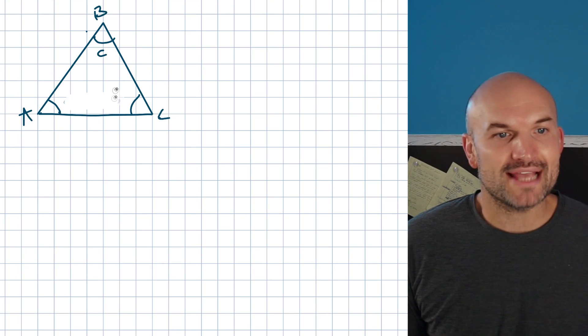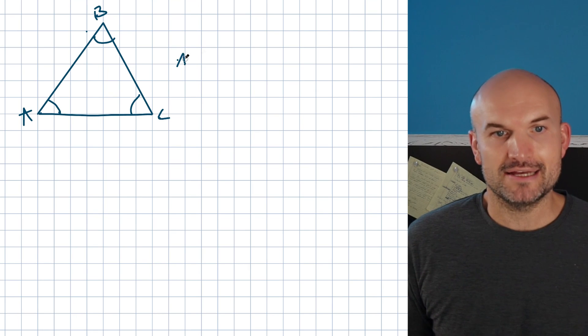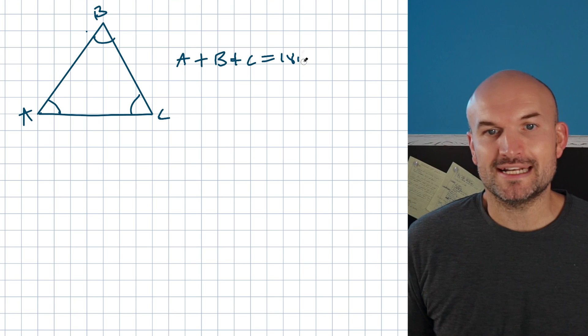let's call them A, B, and C. Now, remember, all the angles in a triangle are going to add up to 180 degrees. I can say A plus B plus C is equal to 180 degrees.